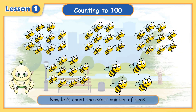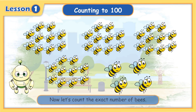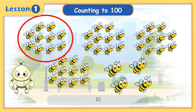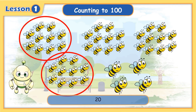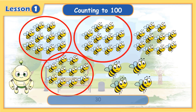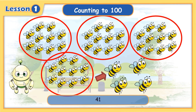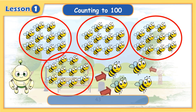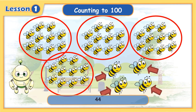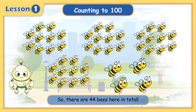Now, let's count the exact number of bees. 10, 20, 30, 40, 41, 42, 43, 44. So, there are 44 bees here in total.